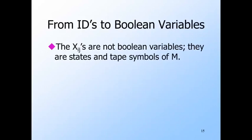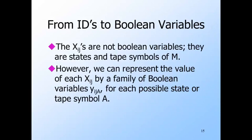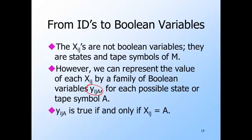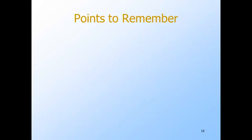The X's are not Boolean variables — they represent states and tape symbols of M. However, each variable can take on only a fixed number of values: the sum of the number of tape symbols and states of the known Turing machine M. Thus we can represent each X-sub-IJ by this number of propositional variables, exactly one of which can be true. That is, for each state or tape symbol A, let Y-sub-IJA be a propositional variable, and we want Y-sub-IJA to be true if and only if X-sub-IJ equals A. There are many components from which the final expression is built, but they fall into two classes.